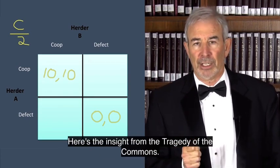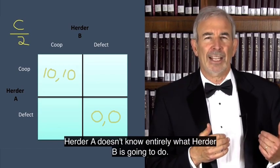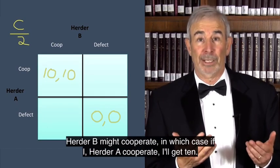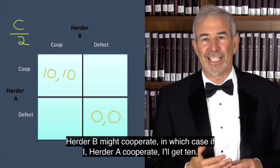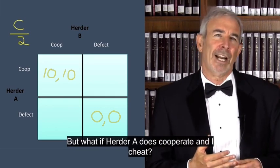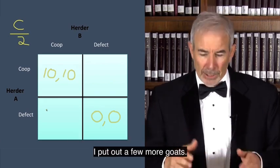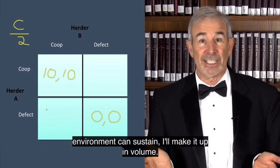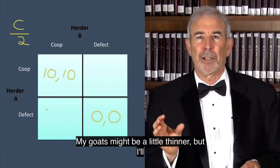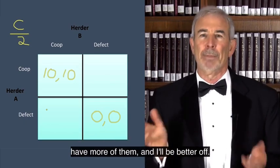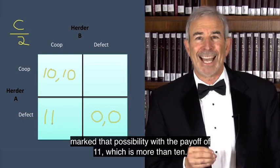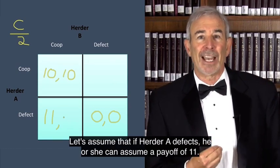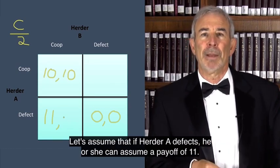Here's the insight from the tragedy of the commons. Herder A doesn't know entirely what herder B is going to do. Herder B might cooperate, in which case, if I, herder A, cooperate, I'll get 10. But what if herder A does cooperate and I cheat? I put out a few more goats. Although there'll be more goats than the environment can sustain, I'll make it up in volume. My goats might be a little thinner, but I'll have more of them and I'll be better off. I have marked that possibility with the payoff of 11, which is more than 10. Let's assume that if herder A defects, he or she can assume a payoff of 11.